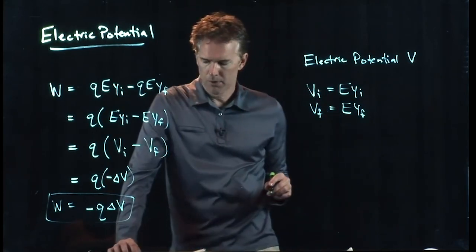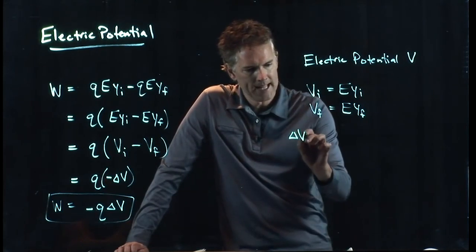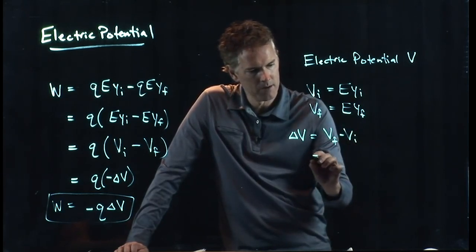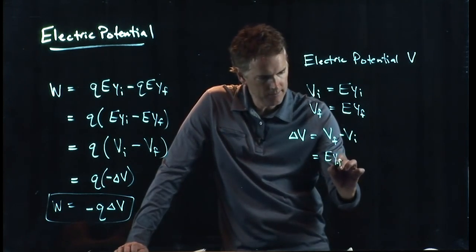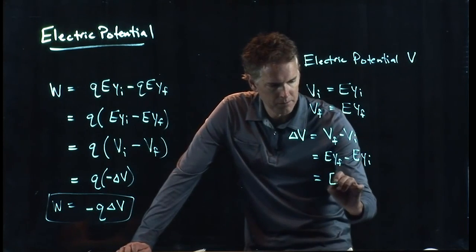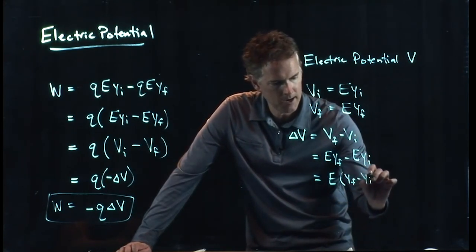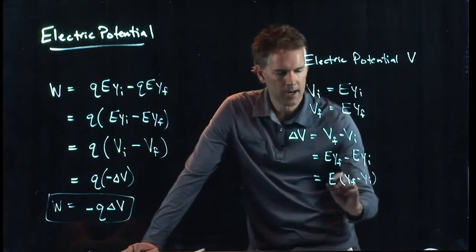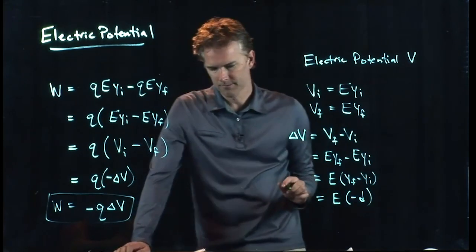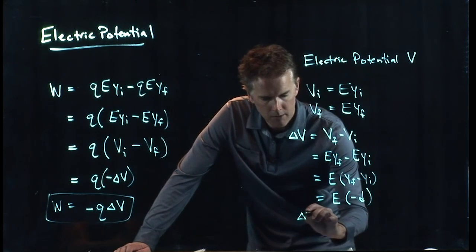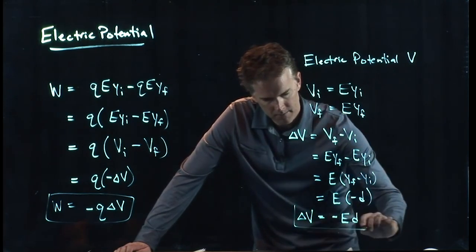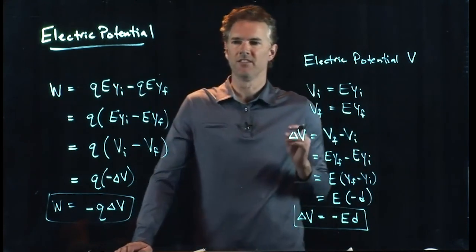And so if we put these things together, what can we say? Delta V is just VF minus VI. But that is EYF minus EYI. The E is common, and so this becomes E times YF minus YI. And YF minus YI is the same as negative D. And so there is a relationship between V, the electric potential, and E, and it's just this. The change in the potential is negative E times D.